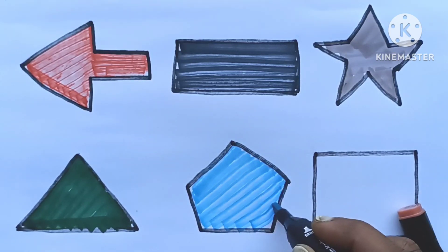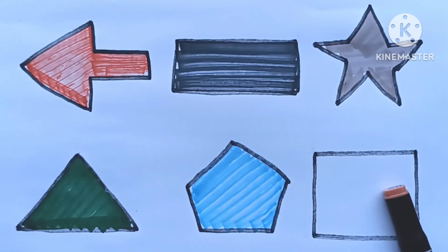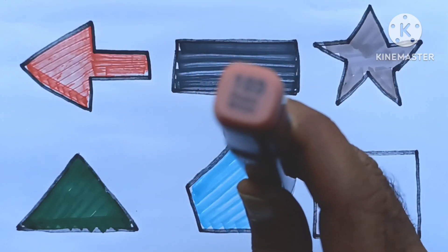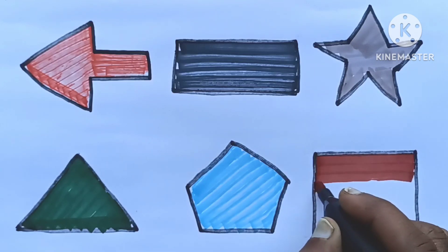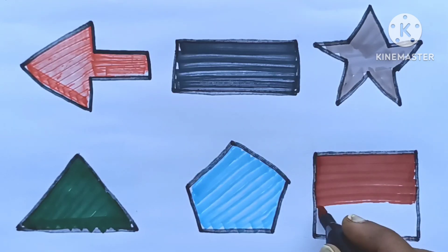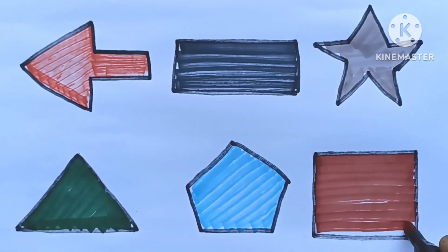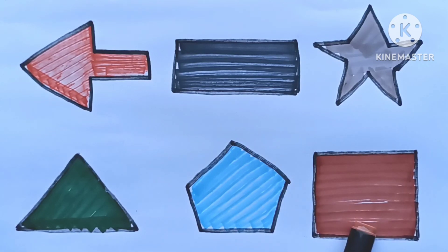Pastel blue color, yellow color, potato brown color. Now learn 2D shapes: arrow, rectangle, star, triangle, pentagon, square.